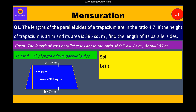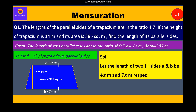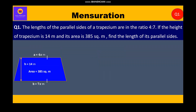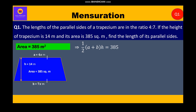Let the length of two parallel sides, i.e. a and b, be 4x meters and 7x meters respectively. Now, area is given to us as 385 square meters. Therefore, half into (a plus b) into h is equal to 385. Further, we shall substitute the values and write: half into (4x plus 7x) into 14 is equal to 385. Further, we write half into 11x into 14 is equal to 385.